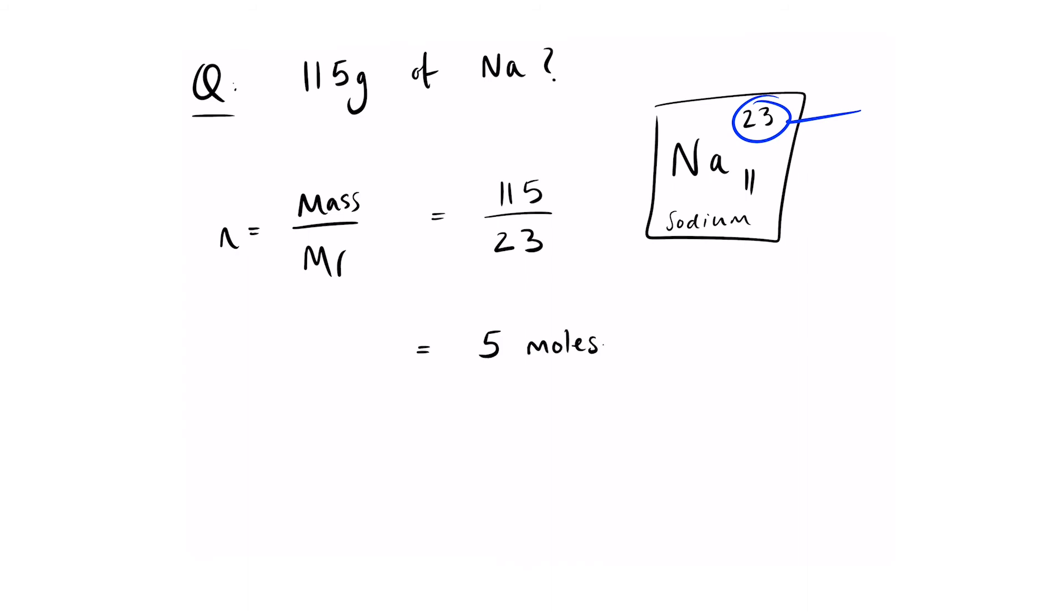Now, that wasn't too bad, was it? Let's see if we can try a harder one. How many moles are there in 88 grams of carbon dioxide? Again, our formula: moles is equal to mass over molecular mass. So the mass is 88 grams. And the MR is going to be 12 plus 16 plus 16, because there's one carbon and two oxygens. And the final answer is 2 moles.